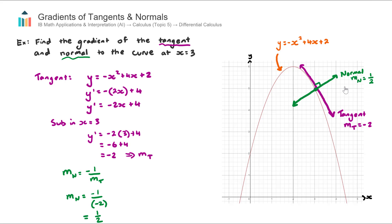So there we have it. We used differential calculus to find the gradient of the tangent, then used our understanding of the relationship between gradients of perpendicular lines to find the gradient of the normal. You can then use those two pieces of information to find the equations of these two lines. I recommend going and practicing some of these questions in the question bank section.